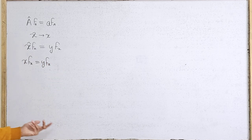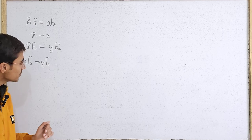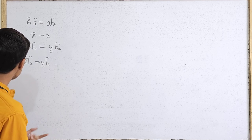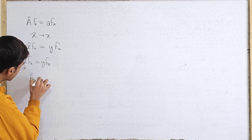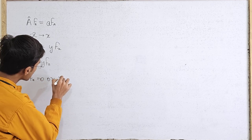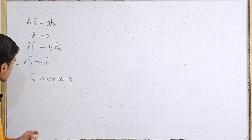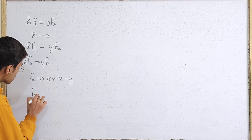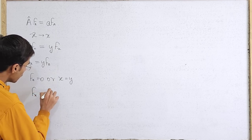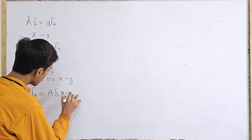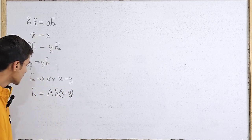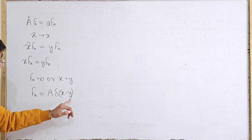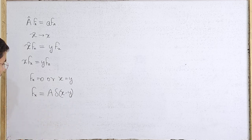What can you say then? Well, either f(x) is zero, or x equals y — that's what we get. So it is not even a differential equation. In this case, we find that f(x) can be written as some constant a times delta of (x minus y).